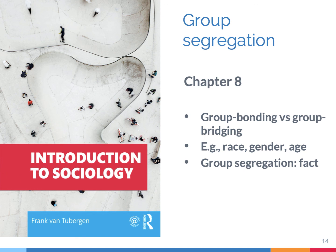In summary, group segregation refers to the degree to which people's social connections are segregated by group affiliation, such as race, gender, and age. There is more segregation when people have more group bonding ties and fewer group bridging ties, and empirical studies reveal strong evidence for group segregation — it's a stylized fact. So if we look at our friends, we see people who belong to the same group as we do, and that may well affect our opinions, the way we think about the world, and our perceptions of outgroups.